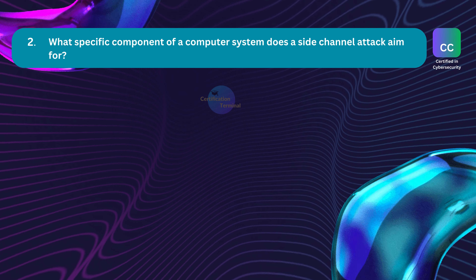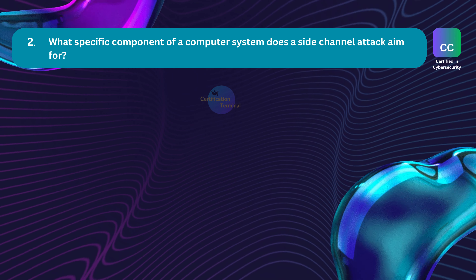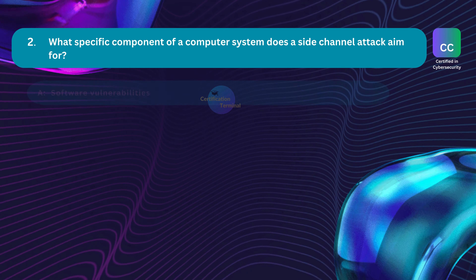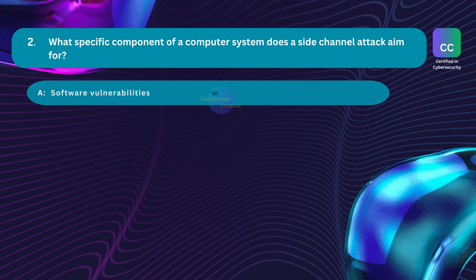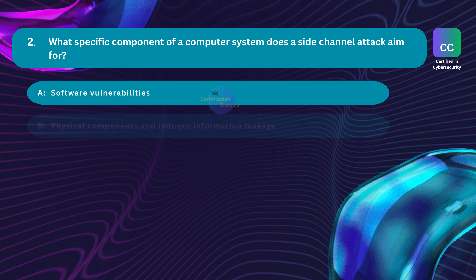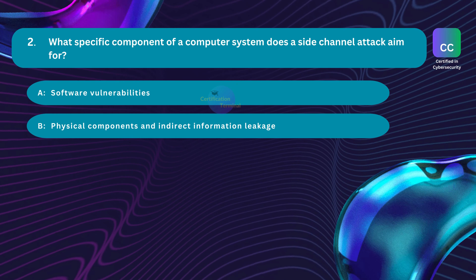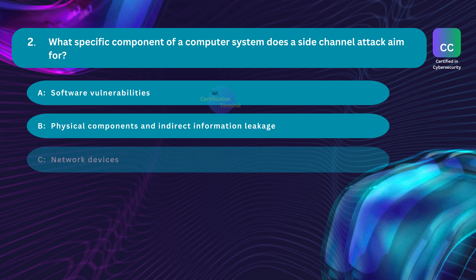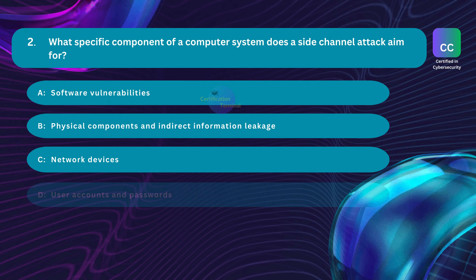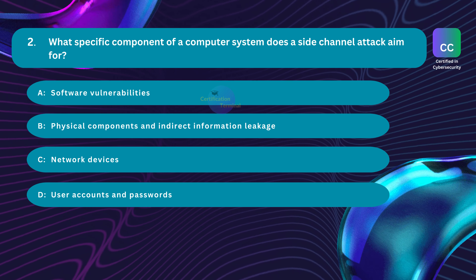Question number 2. What specific component of a computer system does a side-channel attack aim for? Option A: software vulnerabilities. Option B: physical components and indirect information leakage. Option C: network devices. Option D: user accounts and passwords.